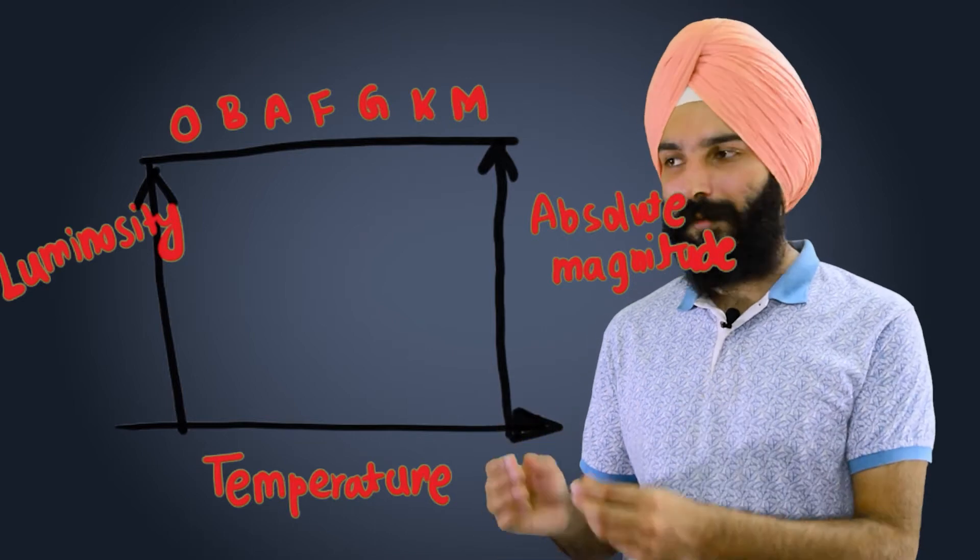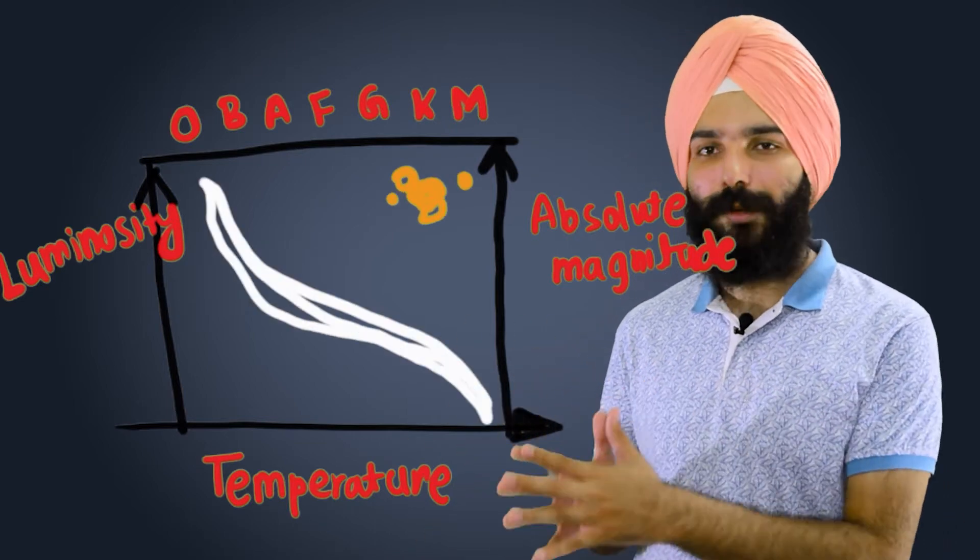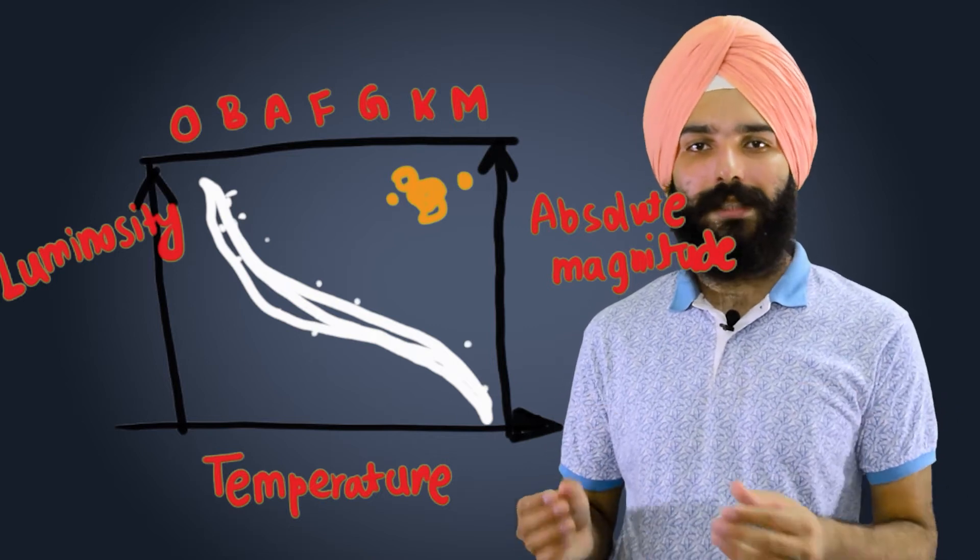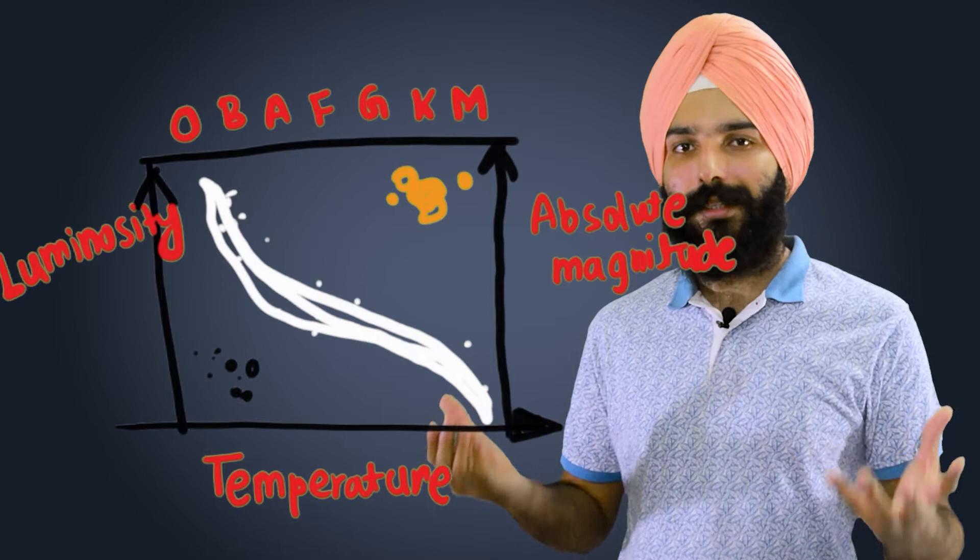So now if we are going to plot the information of the different stars out there in the universe, we are going to have this nice looking plot. And this plot has the information of their brightness, their temperatures, and their color. So there you go. These are all the stars that you will find in the HR diagram.